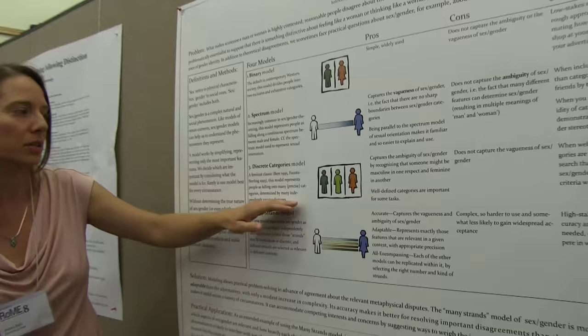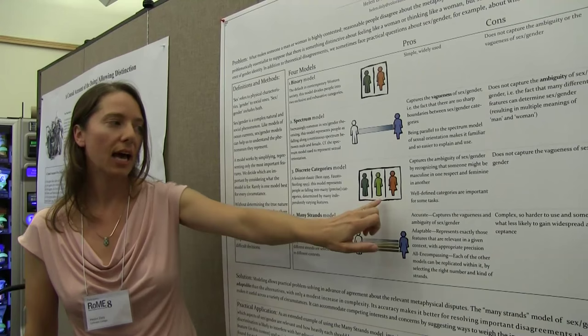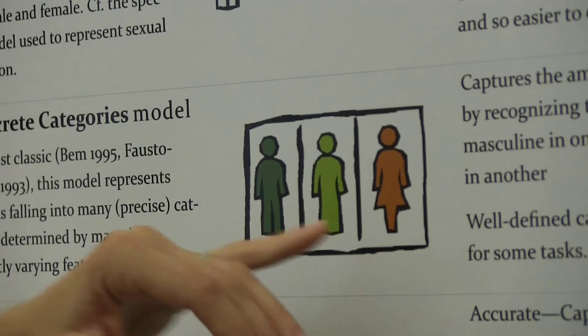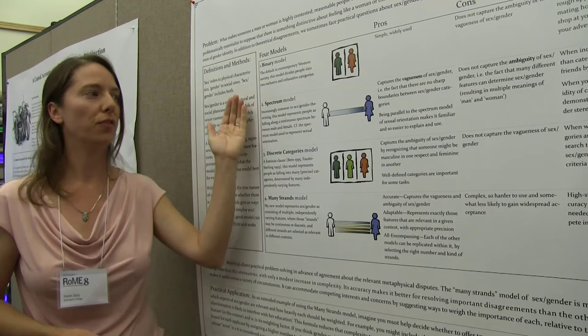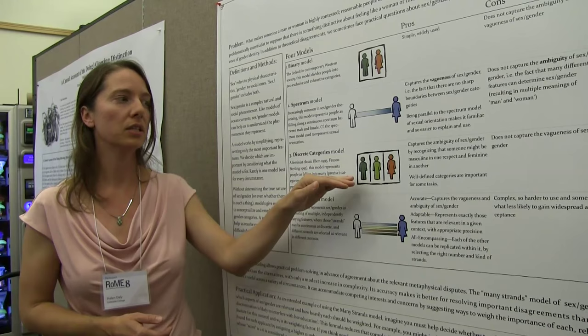And the discrete categories model shows up in a couple of early feminist, well, 90s work. The way it divides people up is into discrete categories — and these are my names, I'm thinking of it in terms of modeling, so I'm giving stuff names. So it treats people as falling into categories, but not just two, maybe a whole lot, maybe just three. And the reason why that's an improvement is that it doesn't depend on just one feature like the spectrum model does, where it says you fall somewhere on a single spectrum. Instead, lots of different things can be relevant. Also, it preserves these useful categories, because sometimes we do want discrete categories to talk about people.